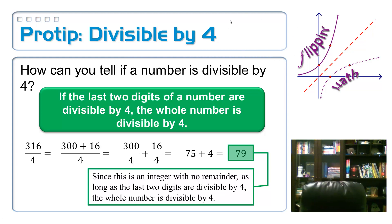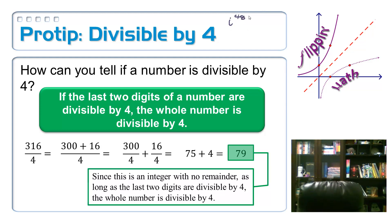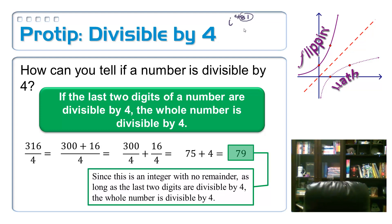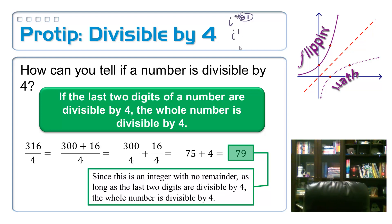What if I wanted to find i to the 481st power without a calculator? Just look at the last two digits: 81. Does 4 go into 81? No, but it does go into 80. So there's a remainder of 1. This is the same as i to the 1st, which is just i.